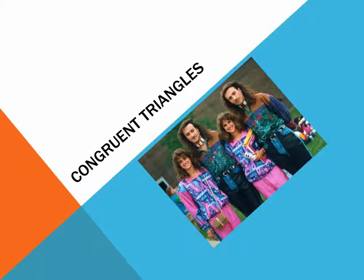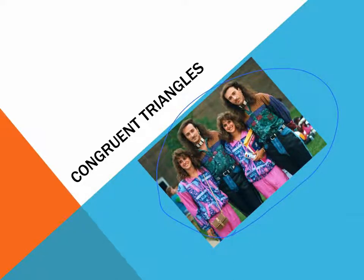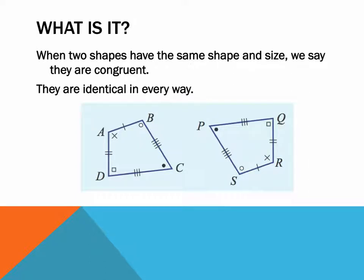Welcome to your video tutorial on congruent triangles. Today we are going to have a look at what congruency means, and in particular we are going to look at the geometric shape of a triangle. When two shapes have the same shape and size, we say that they are congruent. They are identical in every way.